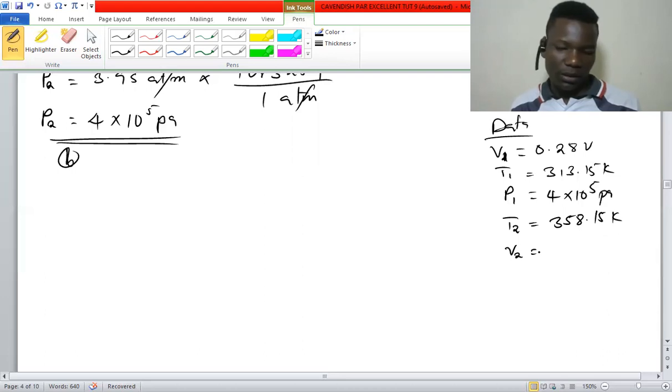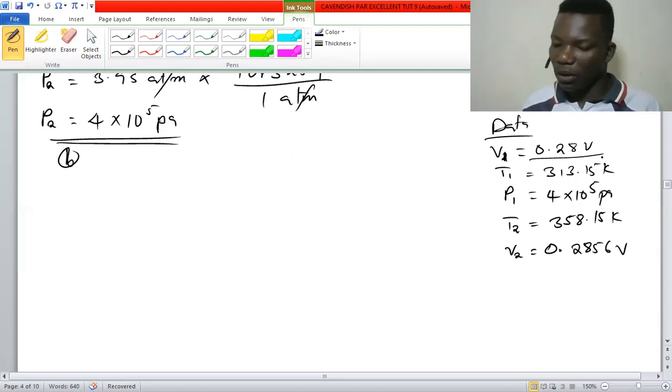The final volume is 0.28 plus 0.28 times 0.02, giving 0.2856 V. You find the 2 percent of the initial volume 0.28 V, and since it increased, you add it to that same one. That will be the new volume.